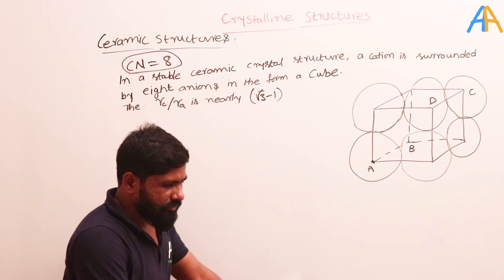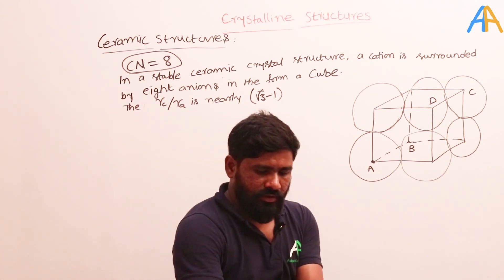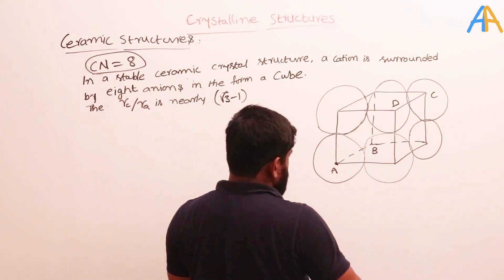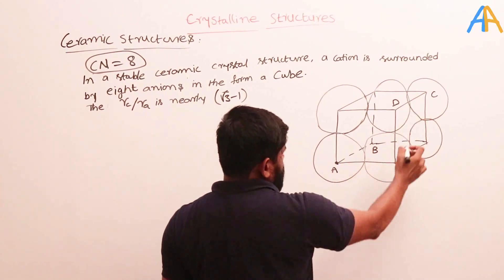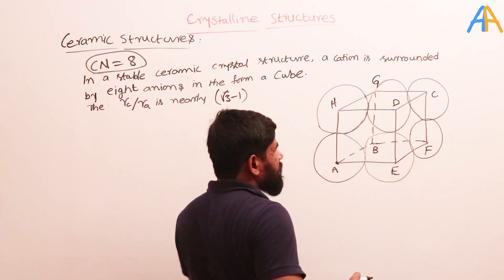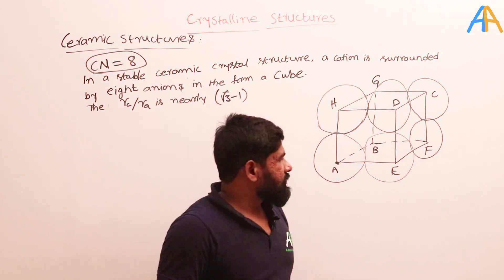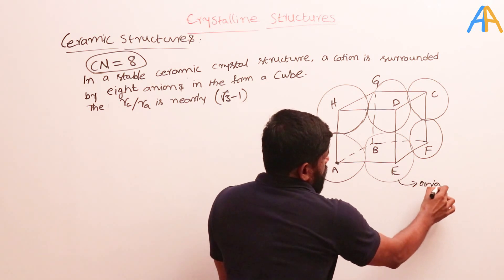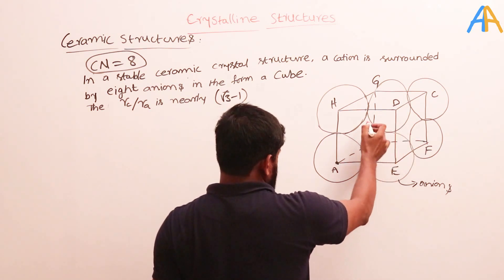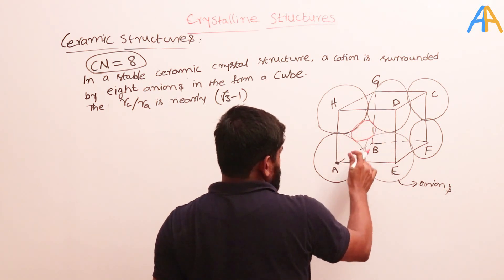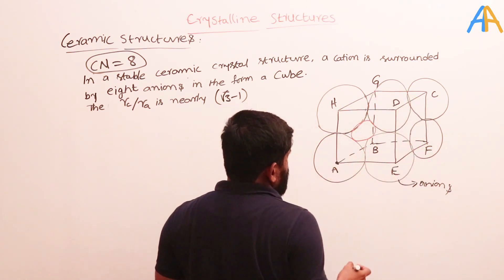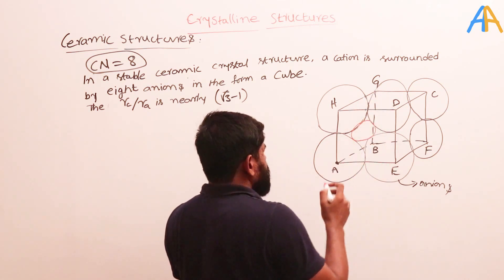Using geometry: this is a cube, and I will mark the corners A, B, C, D, E, F, G, H. At all eight corners we have eight atoms — these are the anions. The cation is inside, like a body-centered cubic arrangement. The cation is touching all the anions — it is stretching toward these four corner atoms and also the atoms in the other four corners.